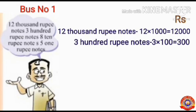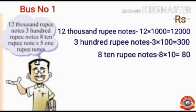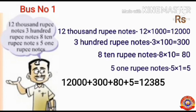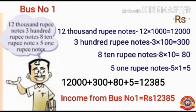For 3 hundred rupee notes: 3 × 100 = 300. For 8 ten-rupee notes: 8 × 10 = 80. For 5 one-rupee notes: 5 × 1 = 5. Then, add these amounts together: 12,000 + 300 + 80 + 5 = 12,385. So the income from bus number 1 equals ₹12,385.